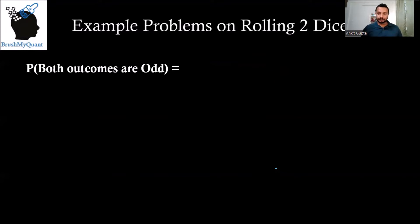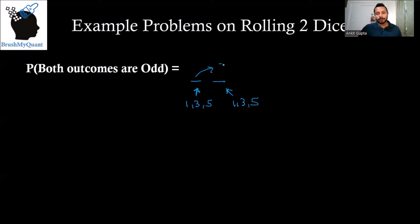What is the probability that both outcomes will be odd? We have two places. In the first place, I can get any of one, three, or five — three choices. In the second place also I can get any of one, three, or five — three choices. So total number of favorable outcomes is nine. Probability that both outcomes are odd is nine divided by 36, or one by four.